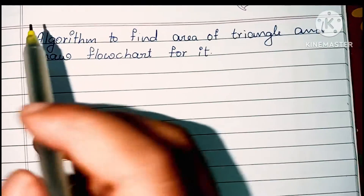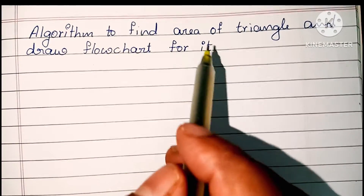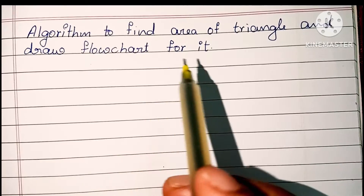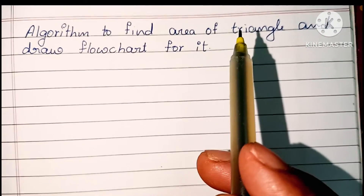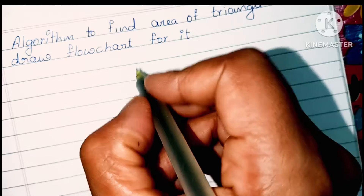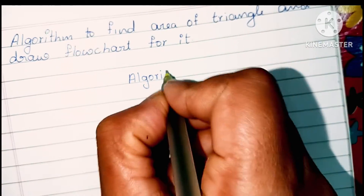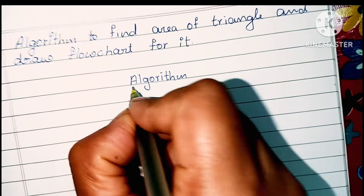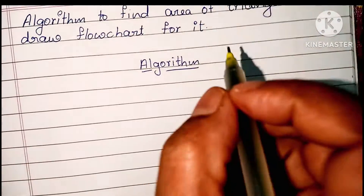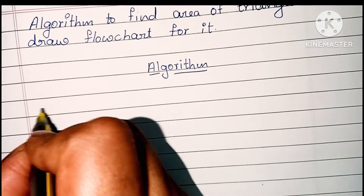Hello guys, in this video we are going to learn how to write an algorithm to find the area of a triangle and draw a flowchart for it. Here we have to find the area of a triangle. First we are going to write the algorithm. An algorithm is a step-by-step process to solve a problem.